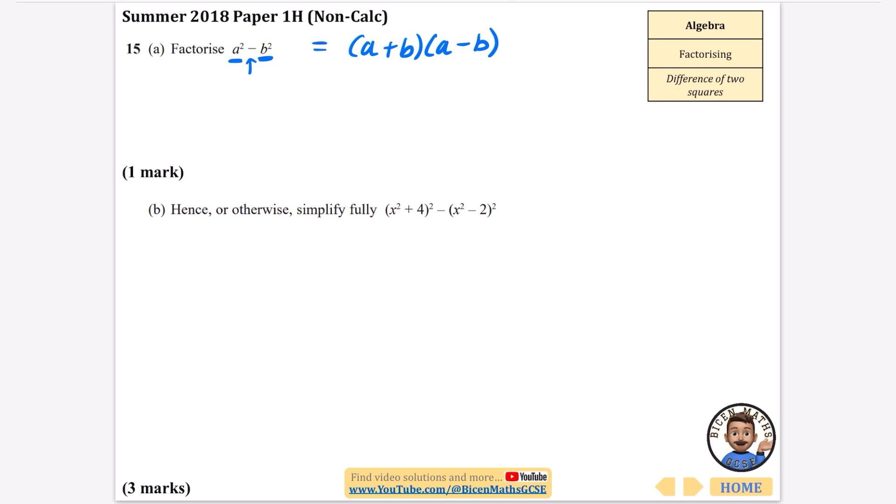Now this is a kind of weird one that we've got. It says hence or otherwise fully simplify this thing. Well, it looks really similar to the one at the top - it's like something squared take away something else squared. So I think we should say that this a part is this and this b part is this. There are other ways of doing this - you could expand the brackets - but I'm going to try and do the smartest way. So it looks like we're saying that a is x squared plus four and we're saying that b is x squared minus two.